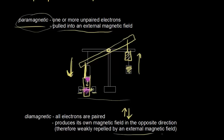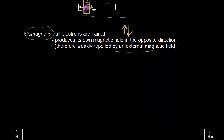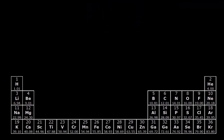We can determine whether atoms or ions are paramagnetic or diamagnetic by writing electron configurations. Let's look at a shortened version of the periodic table and work through some elements to figure out whether they are paramagnetic or diamagnetic.